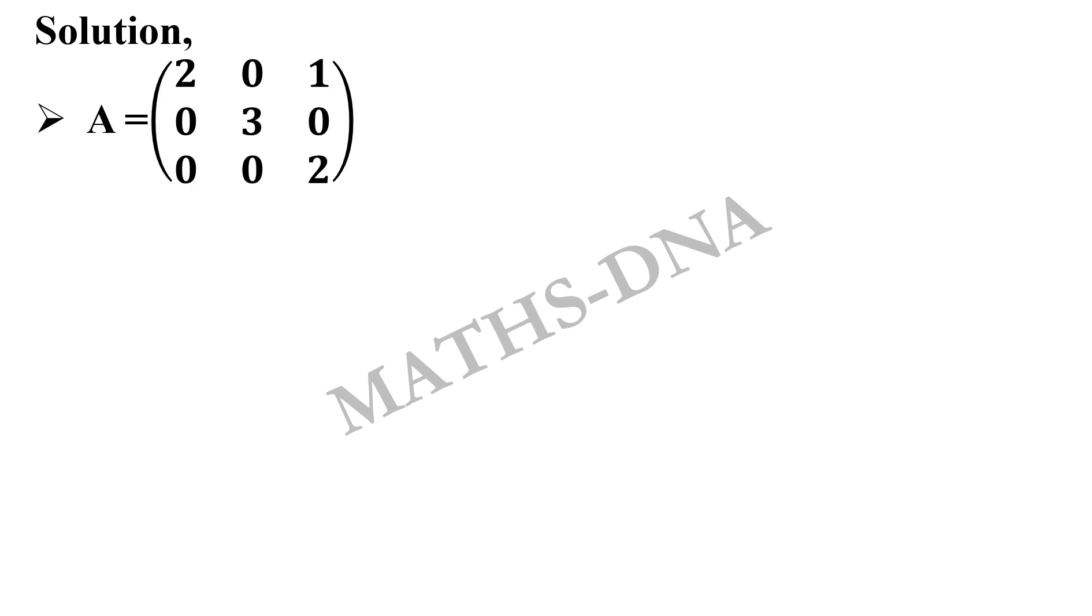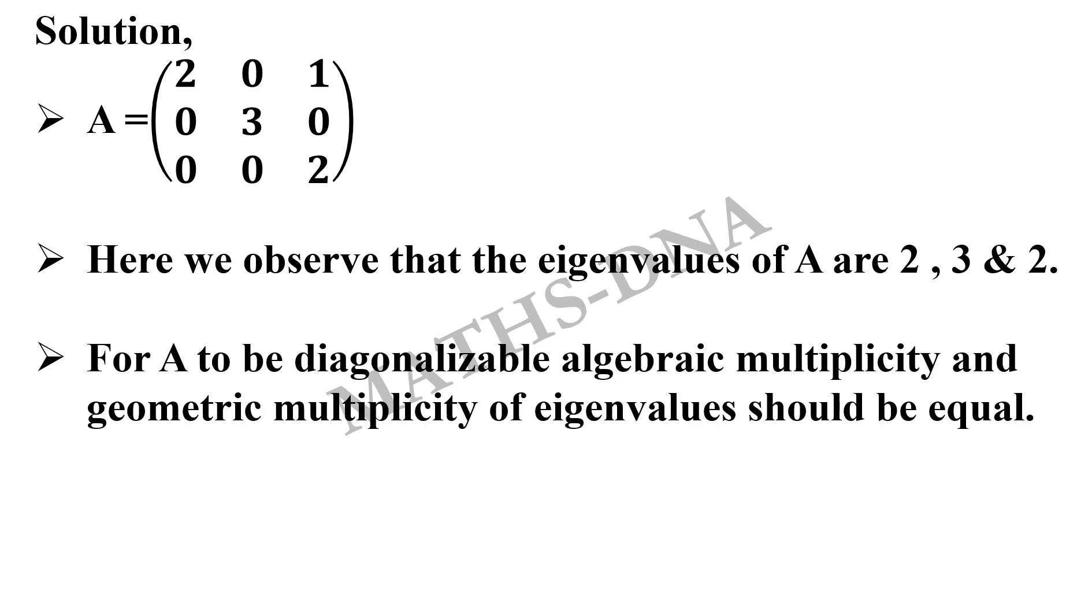In option A, the given matrix is a 3 by 3 matrix. We can easily know that the eigenvalues of this matrix will be 2, 3 and 2. Why? Because it is an upper triangular matrix. Now, for a matrix to be diagonalizable, the algebraic multiplicity and the geometric multiplicity of the eigenvalues should be equal. It is a result. We will use this result to solve this.